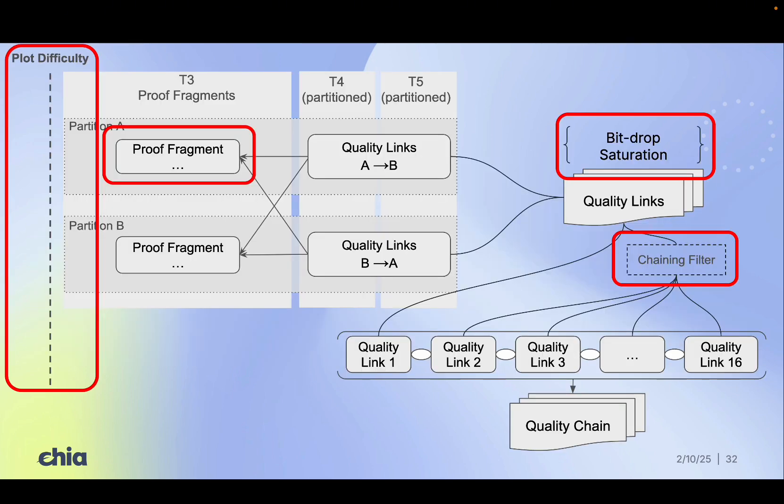To recap, T1, T2, and the plot difficulty defend against grinding. We store only partial data for proofs in proof fragments, which in turn enable bit drop saturation on a sufficiently large set of quality links, and a chaining filter in constructing the quality chain blocks attacker shortcuts to pass the block difficulty test.